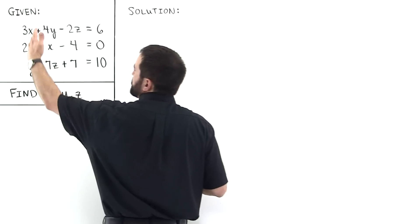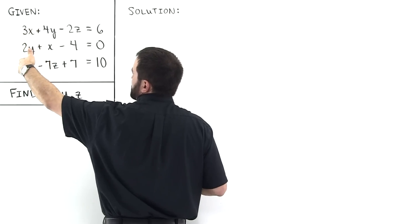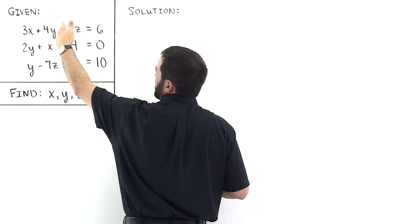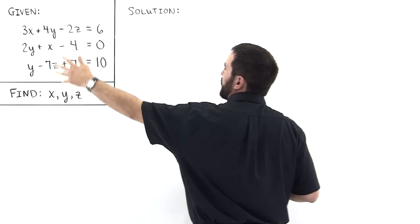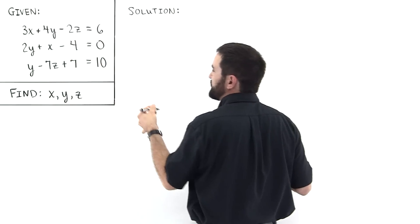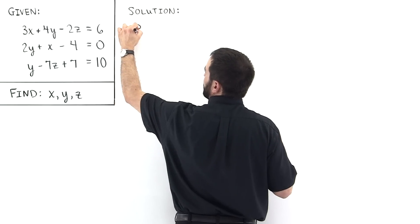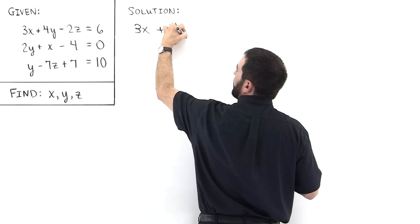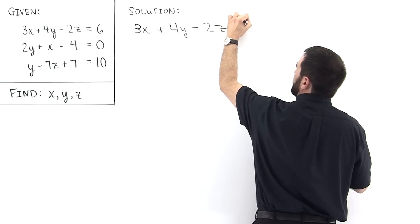The first thing we'll do is line up all the x's in the first position, all the y's in the second position, and all the z's in the third position. Then we're going to bring all the constants over to the right-hand side. The first equation is conveniently already done for us: 3x plus 4y minus 2z is equal to 6.